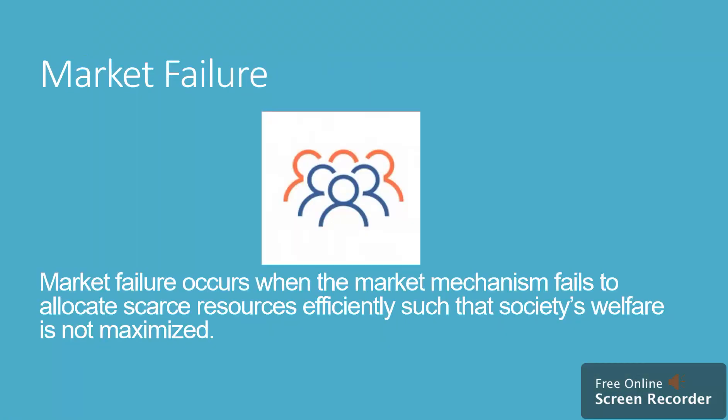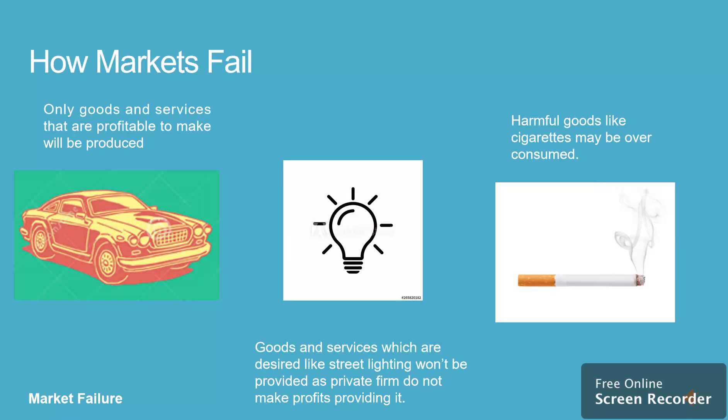Market failure occurs when the market mechanism fails to allocate scarce resources efficiently such that society's welfare is not maximized. Only goods and services that are profitable to make will be produced. Goods and services which are desired, like street lighting, won't be provided as private firms do not make profits providing them.